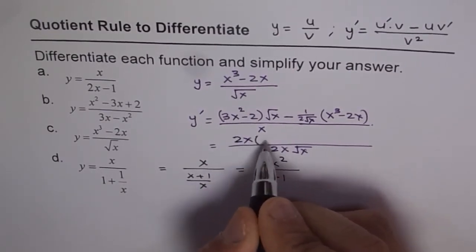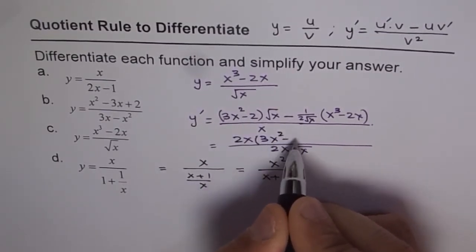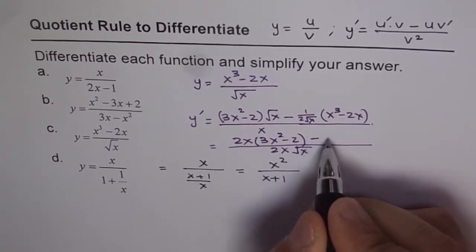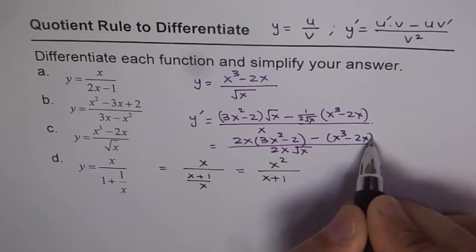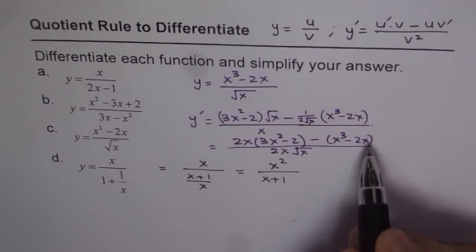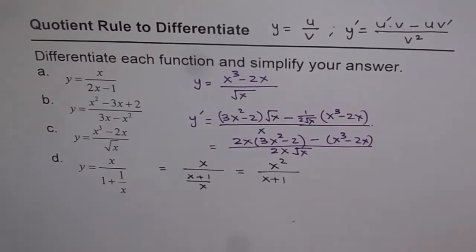So we have 2x and then 3x square minus 2. That is the first half and here you will have minus of x cubed minus 2x. Now it is a simple polynomial in the numerator which you can expand and simplify.